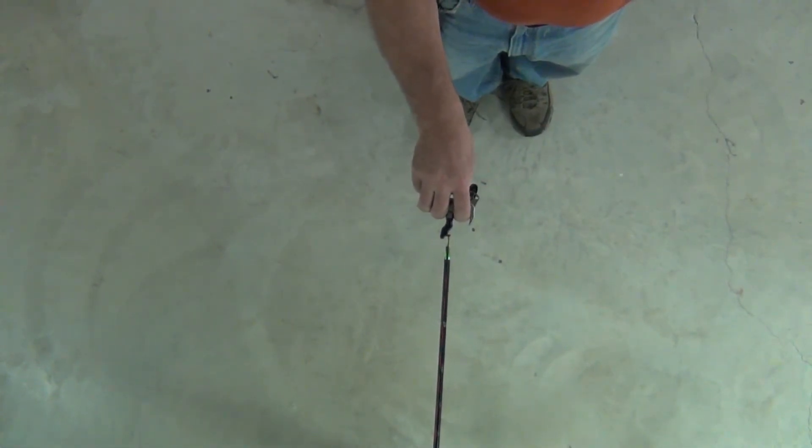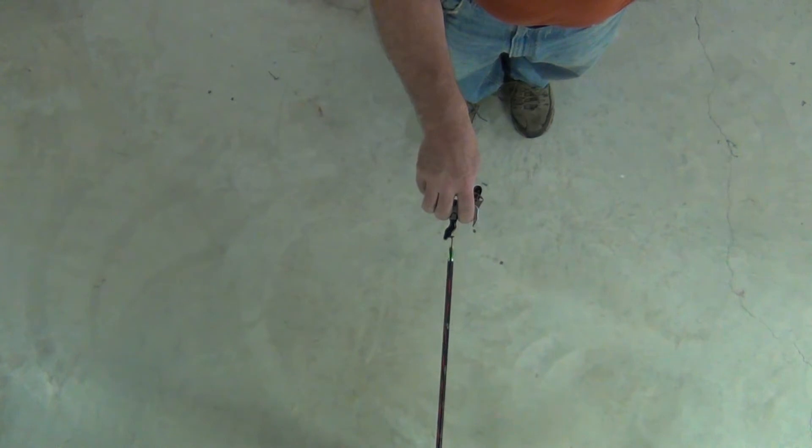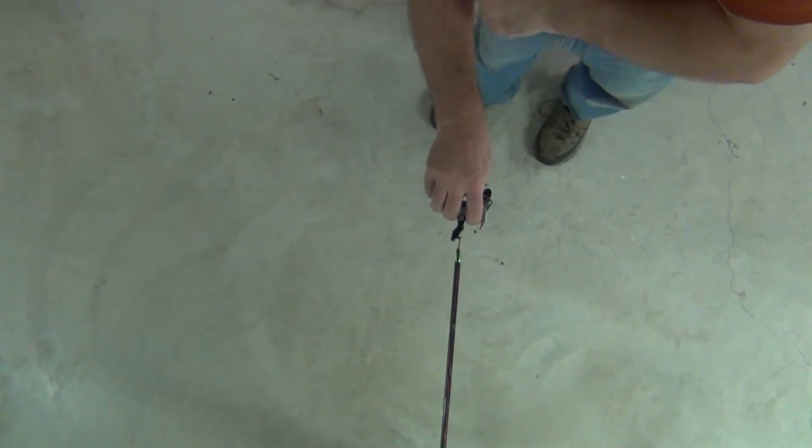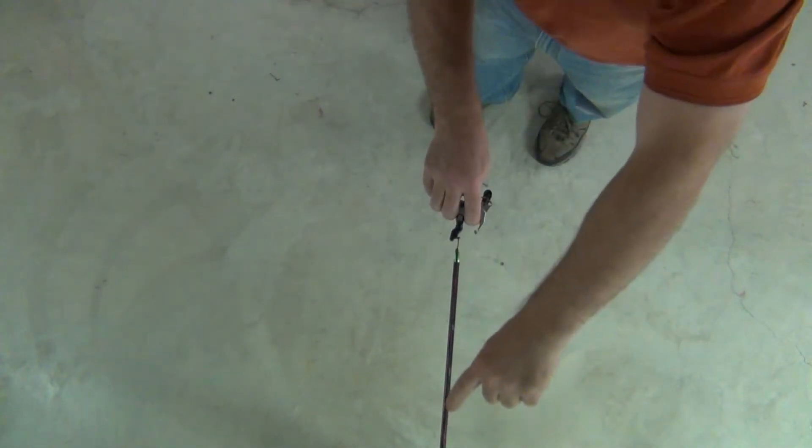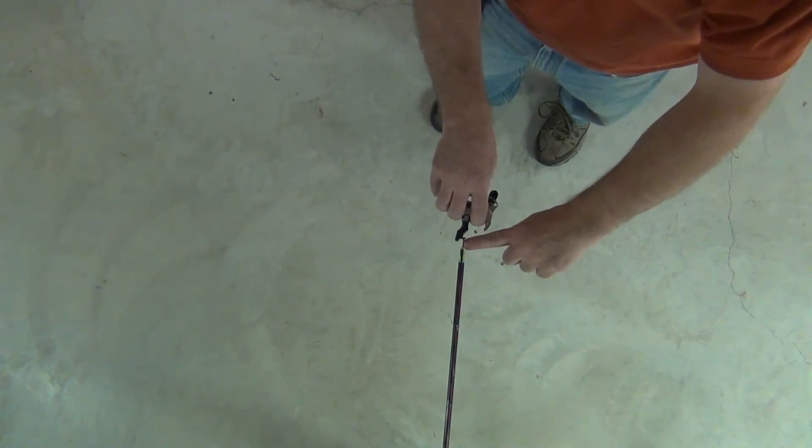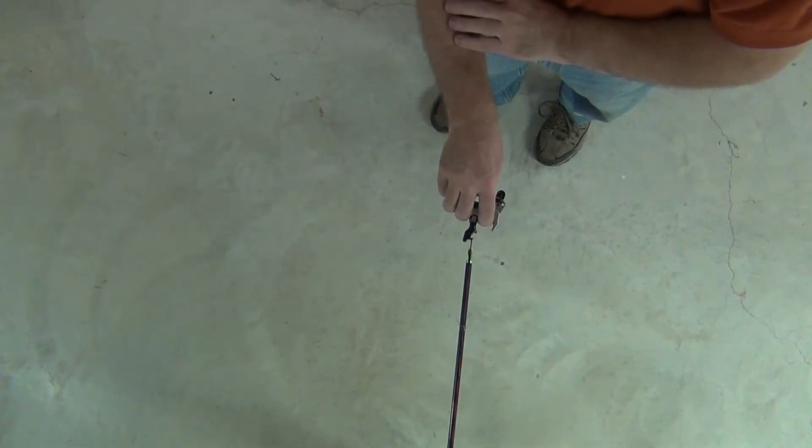This video is for the benefit of anybody that buys into the notion that the angle of the forearm relative to the angle of the string has any effect on the D-loop or on the overall tune of the bow.